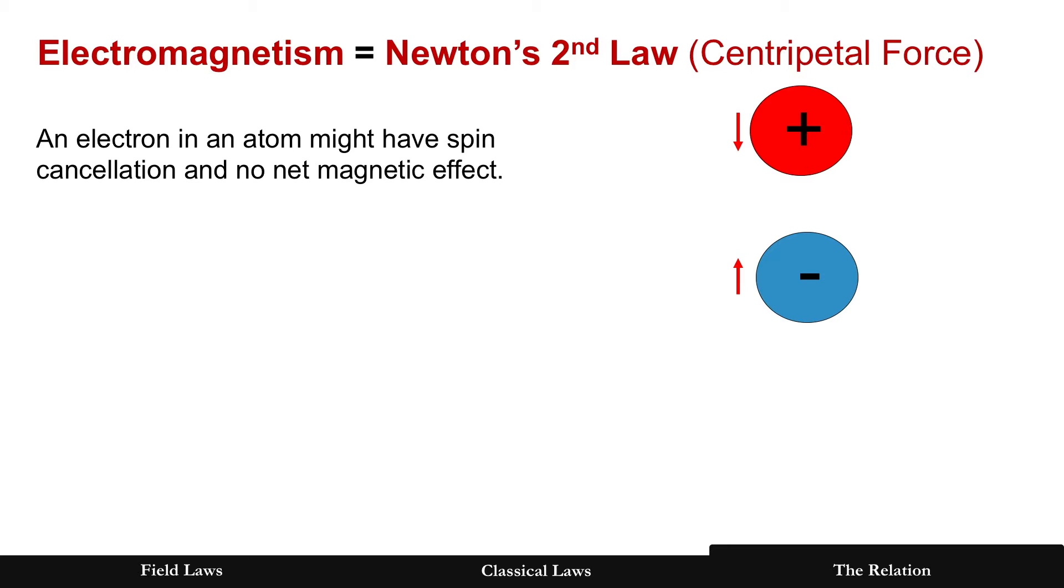Now those are longitudinal waves. So in motion, same thing happens for the transverse wave. An electron and an atom might have spin cancellation, no net magnetic effect as was shown earlier, until...